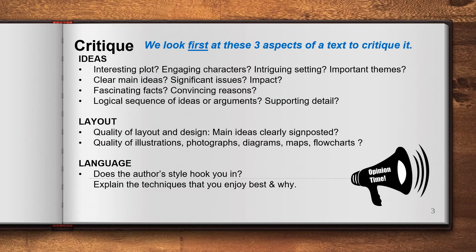When we critique a text, we look first at three aspects. We look at the ideas in the text. If it's a story, we critique whether we find the plot interesting, the characters engaging, the setting intriguing, and the themes important. If we're looking at a factual text, we consider whether the main ideas are clear, whether there are significant issues being written about, and whether the impacts of those issues are explained clearly. Does this text have fascinating facts, convincing reasons, a logical sequence of arguments, and supporting detail?